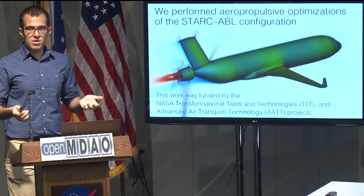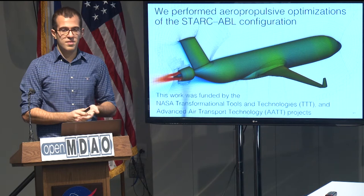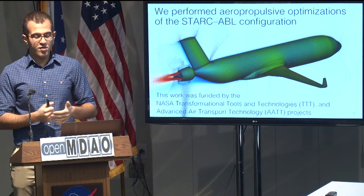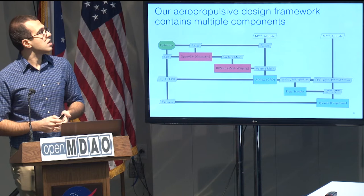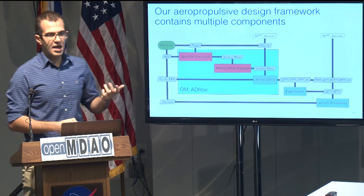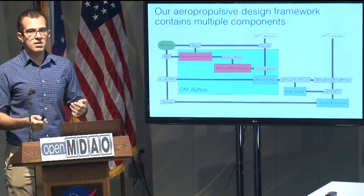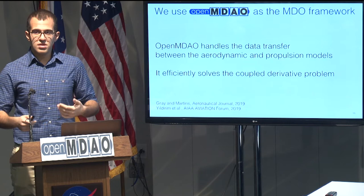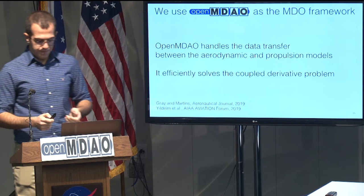With this approach, we performed aeropropulsive design optimizations of the STARC-ABL configuration. This configuration uses an electric fan on the aft fuselage to ingest the fuselage boundary layer for improved aeropropulsive efficiency. This work was funded by the NASA Transformational Tools and Technologies and Advanced Air Transport Technology projects. The toolchain used for this work has multiple components — OMAD flow is responsible for geometry, mesh warping, and the CFD solver. On top of this, we added a lower-order propulsion model to compute the shaft power required to operate the fan. OpenMDAO handles all the data transfer between the components and efficiently solves the coupled derivative problem.